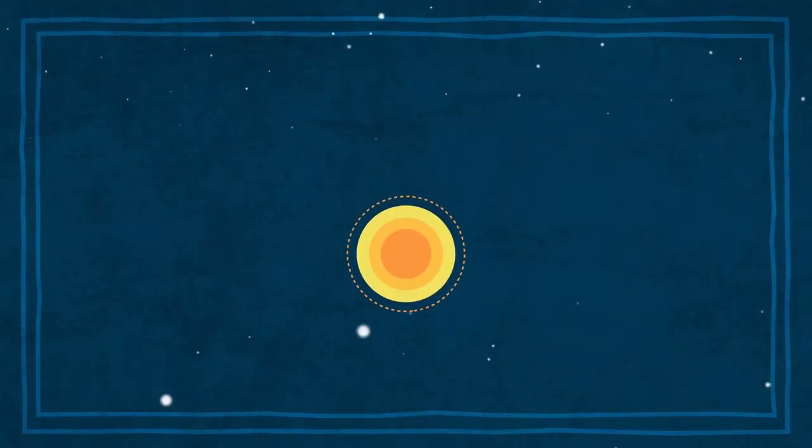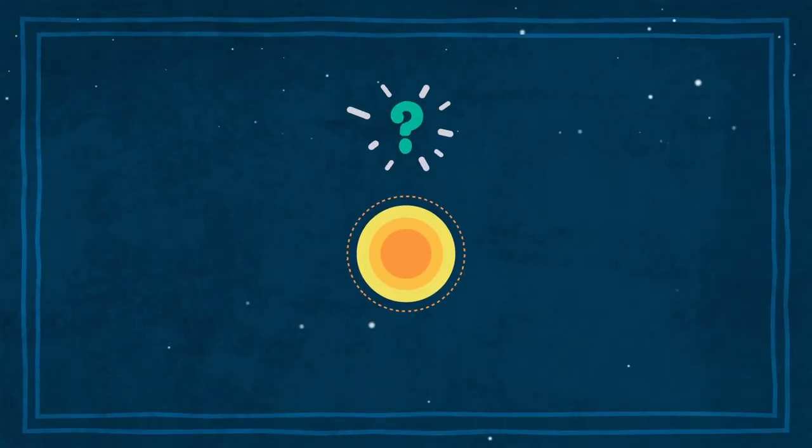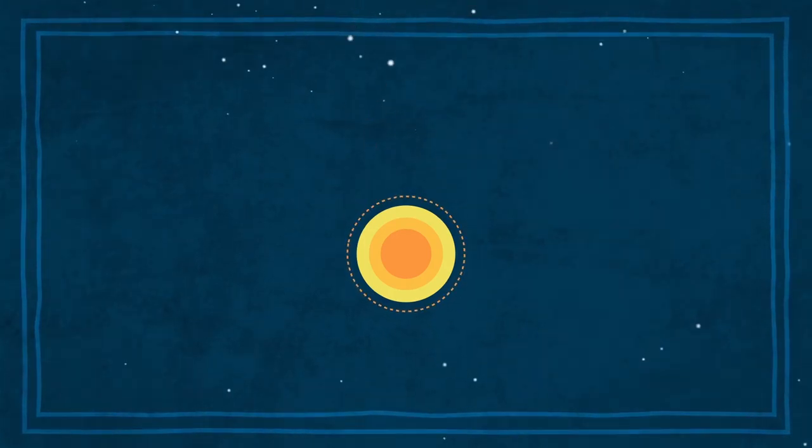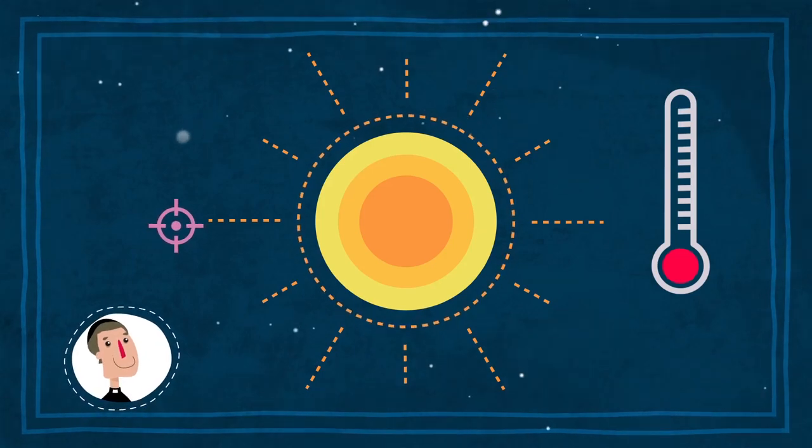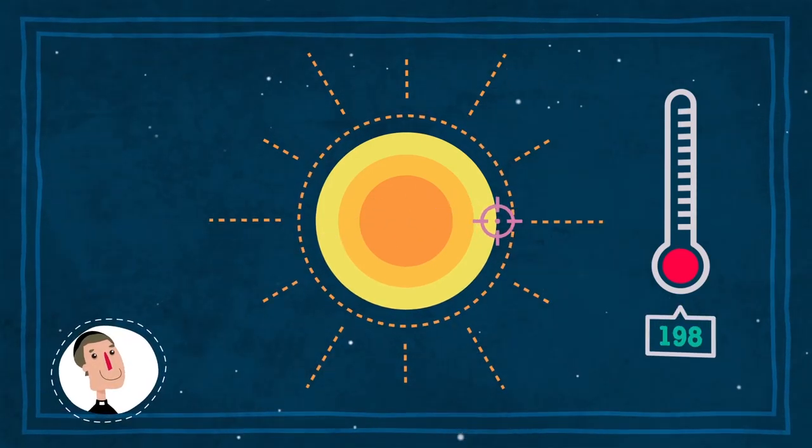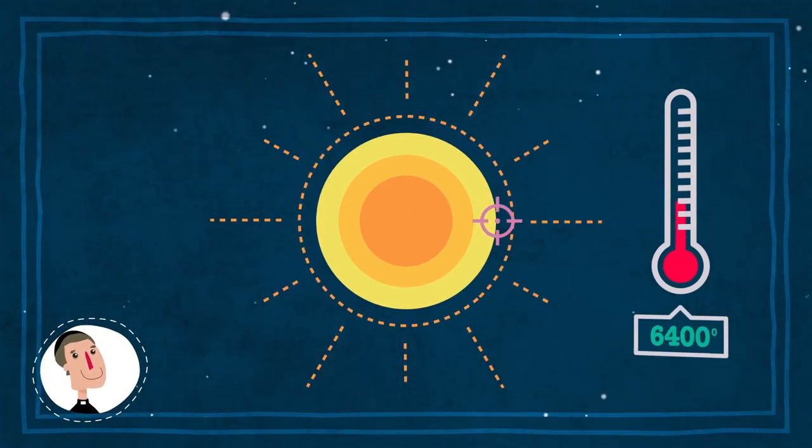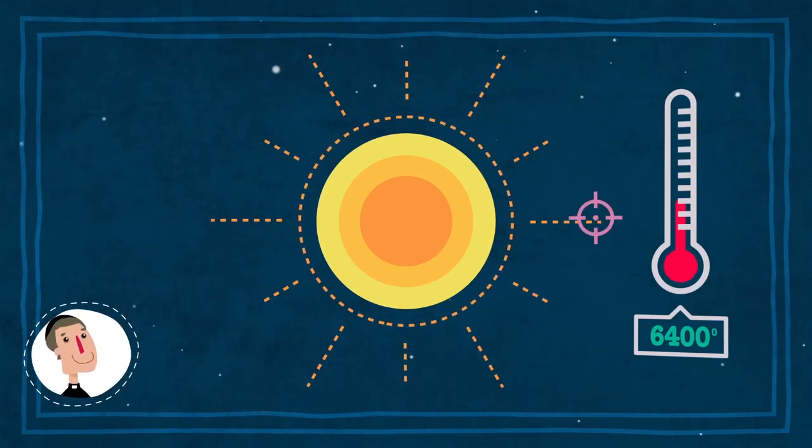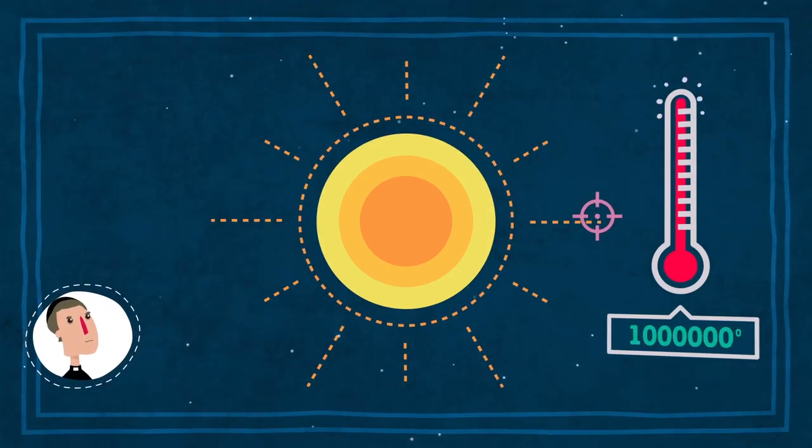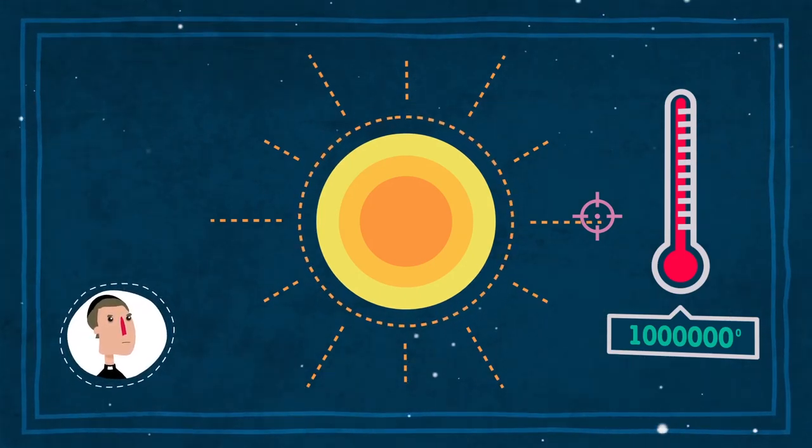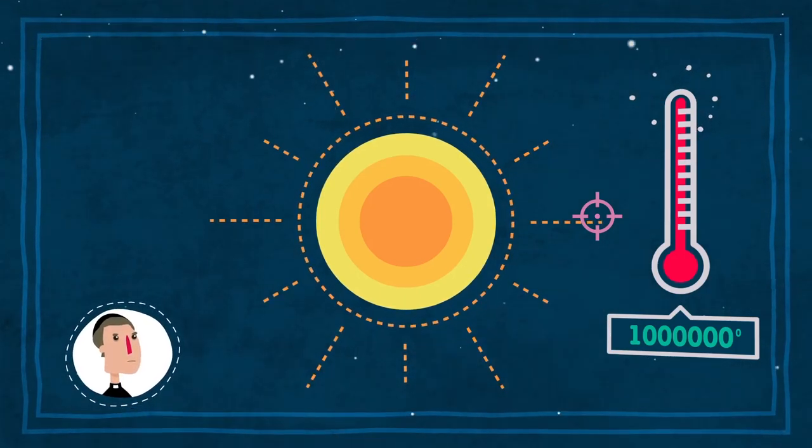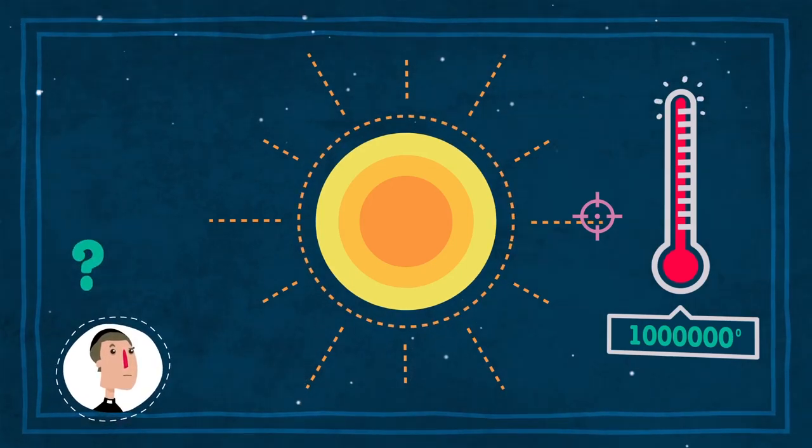¿Pero por qué son tan importantes? Bueno, digamos que el Sol está lleno de enigmas no resueltos. Por ejemplo, ¿sabías que las capas externas están mucho más calientes que la superficie? La temperatura de la corona solar es de más de un millón de grados, mientras que apenas hay 6.000 en la superficie. Esto es un poco extraño, y aún no sabemos por qué.